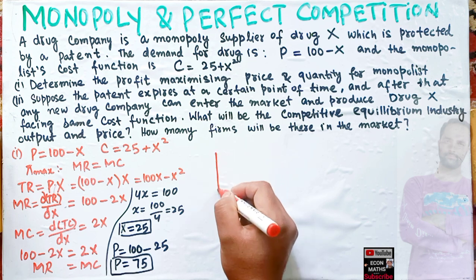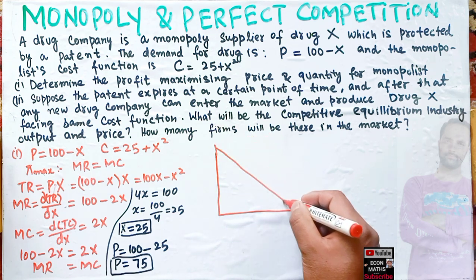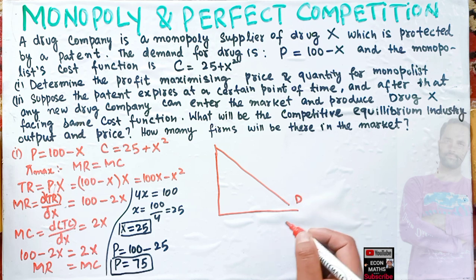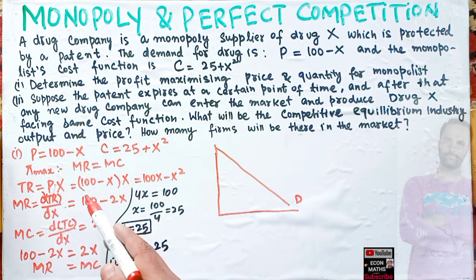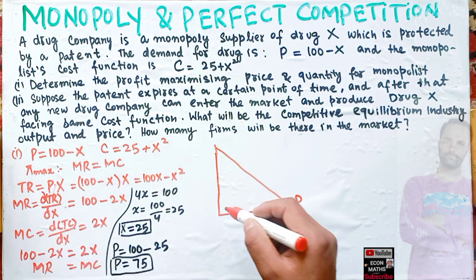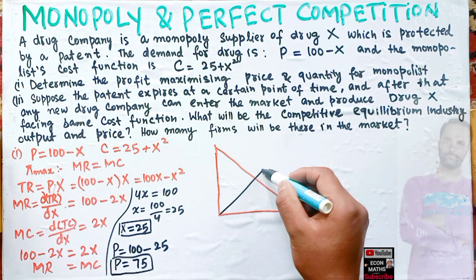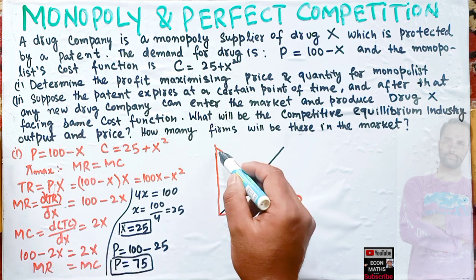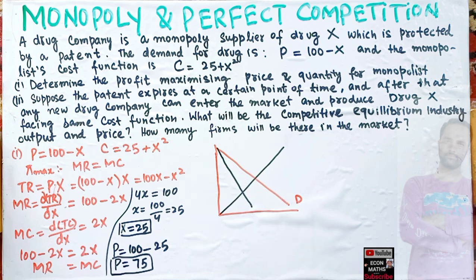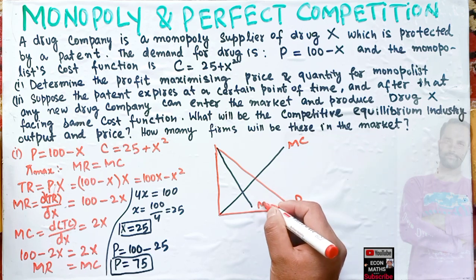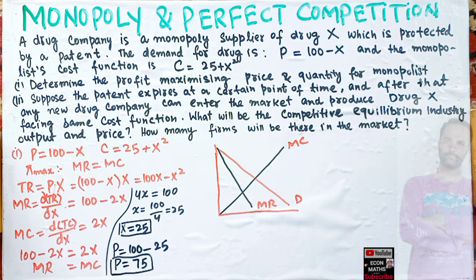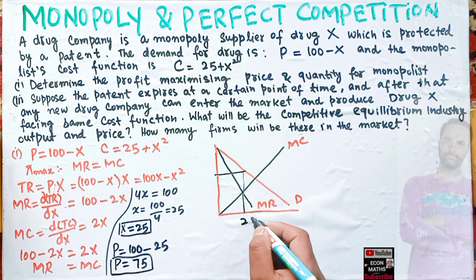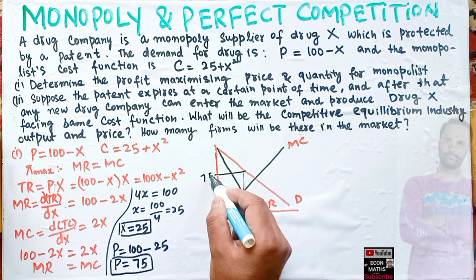Let me draw a rough graph. We have the demand function, and the cost function is 25 + x². Marginal cost is 2x, and marginal revenue was 100 - 2x. At equilibrium, MR = MC. The monopolist produces 25 units at a price of 75.